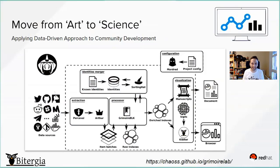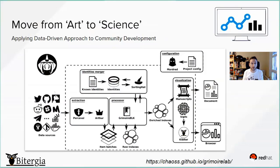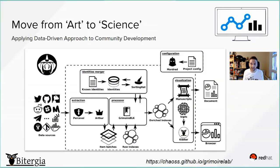A quick architecture briefing: on the left we have data sources, and Percival is the main ingestion tool. Everything is stored in Elasticsearch and Kibana. A key feature is SortingHat, where we manage all of the identities for a given developer across all data sources, all projects, and all of the CNCF ecosystem — considering the different identities each of us may have in GitHub, GitLab, IRC channels, and so on. This tool manages affiliations and affiliations over time. On the right side we have Kibiter, a downstream version with extra capabilities such as the network chart, and the Cauldron browser, which is the tool we use to analyze this information. This is Grimoire Lab.